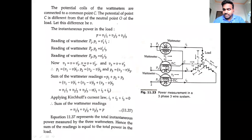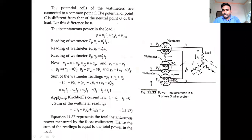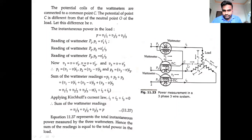From the wattmeter, we connect a voltage from the line to the common point. The total voltage observed is represented as capital V. The potential coils are connected to the common point C. The potential at point C is represented as capital C. From C to the neutral point, the difference in voltage is represented as small v.